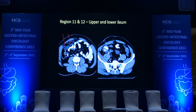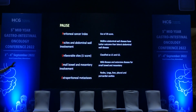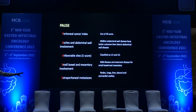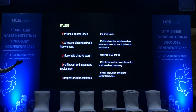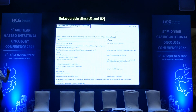The PAUSE criteria: P — PCI; A — ascites; U — unfavorable sites; S — small bowel and mesentery involvement; E — extraperitoneal metastasis. Important point: midline abdominal wall disease has a better outcome than lateral abdominal wall disease. U1 sites increase surgical complexity; U2 sites reduce the likelihood of complete cytoreduction — these are the classic unfavorable lesion sites.